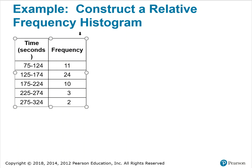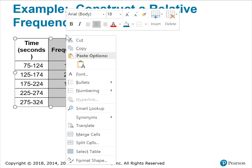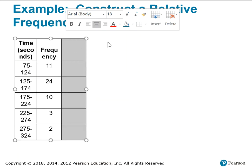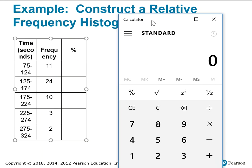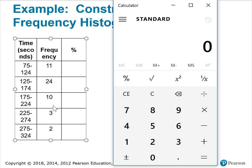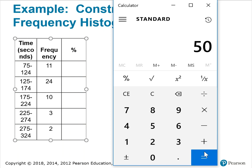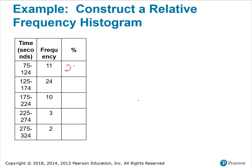I'll insert another column to include the relative frequency, shown here as percents. To get the percentage or proportion each class represents of the total, I need the total frequency, which is 50. So: 11 divided by 50 is 22%, 24 divided by 50 is 48%, 10 divided by 50 is 20%, 3 divided by 50 is 6%, and 2 divided by 50 is 4%.